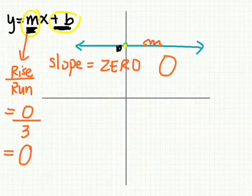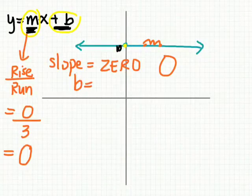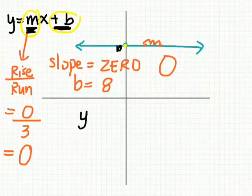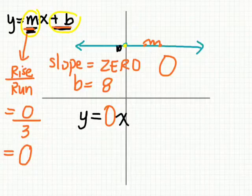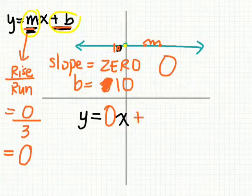And the y-intercept is ten. So if we were to put this into slope-intercept form, if we were to plug it in, we have y equals zero, because my m is zero, so zero x. And in this case, my y-intercept was ten, plus ten.